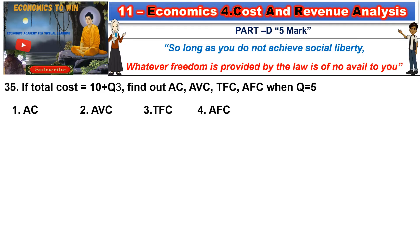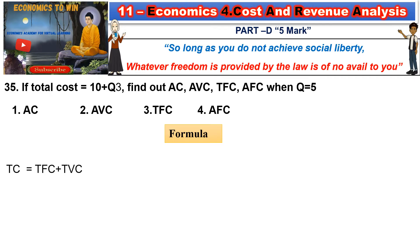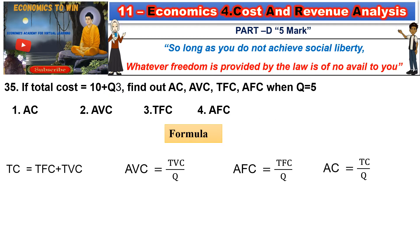This is an important 5-mark question. The first formula is: TC is equal to TFC plus TVC — total fixed cost plus total variable cost. Then AVC is equal to TVC divided by q. Average variable cost equals total variable cost divided by q. AFC is equal to total fixed cost divided by q — average fixed cost equals total fixed cost divided by the number of products.